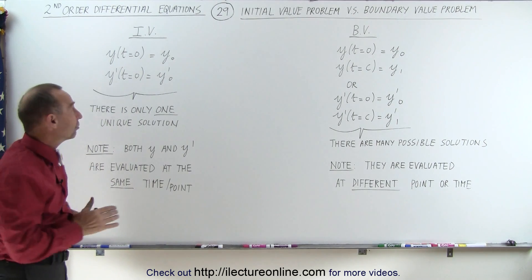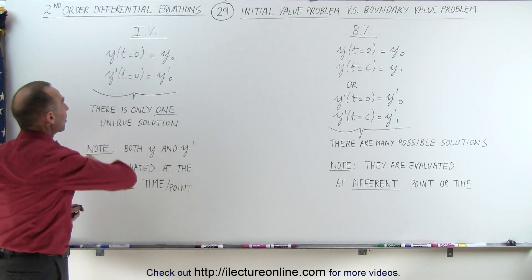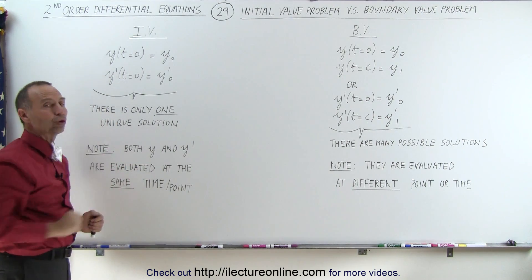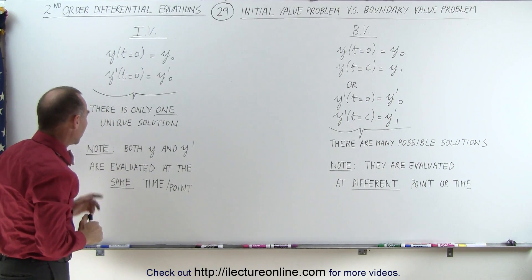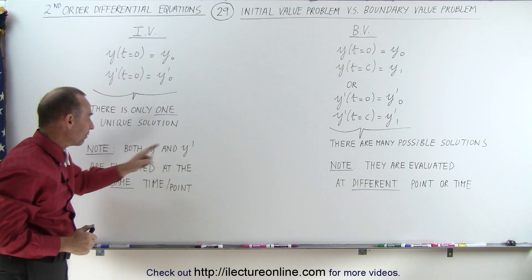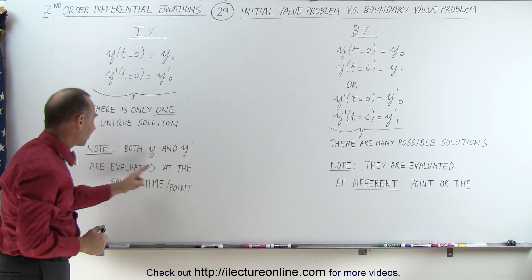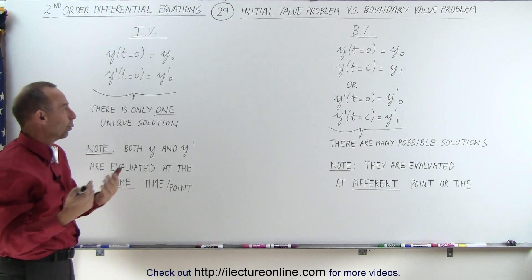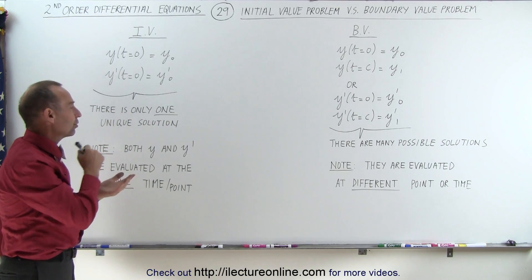When you do it this way, this is called an initial value problem. And in that case, there's only one unique solution to the problem. Note that both y and y prime, the function and the derivative of the function, are evaluated at the same time or at the same point. And that's why you only end up with a very specific unique solution.